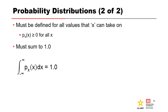A valid probability distribution must be defined for all values that variable can take on. The probabilities must be greater than or equal to zero — they obviously cannot be negative. The sum of all the probabilities must be equal to one. These two requirements are the first two axioms of probability from Module 1: all probabilities are positive real numbers, and the combined probability of all outcomes must equal one.